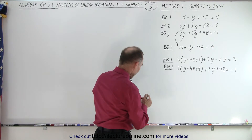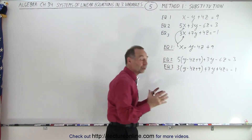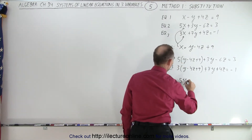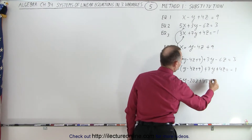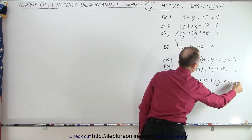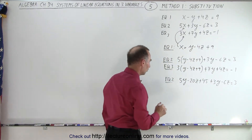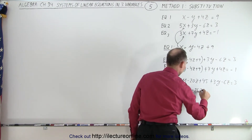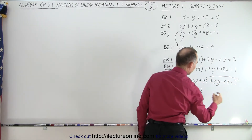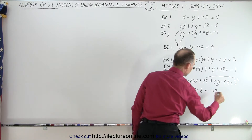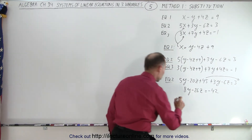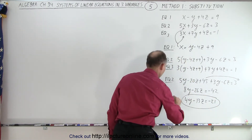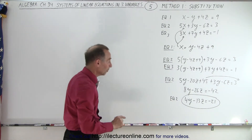We now have two equations with two unknowns, y and z. Simplifying equation two: we get 5y minus 20z plus 45 plus 3y minus 6z equals 3. Collecting terms: 5y and 3y gives 8y; minus 20z minus 6z is minus 26z. Bringing 45 to the right gives negative 45 plus 3, which is negative 42. Everything is even, so we divide by 2, giving us 4y minus 13z equals minus 21. That is equation two in simplified form with only y and z.